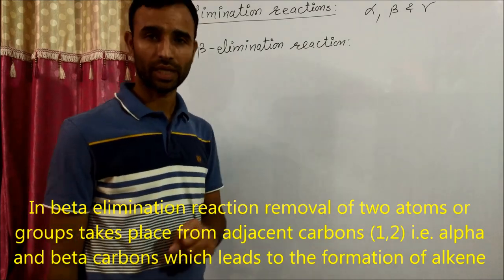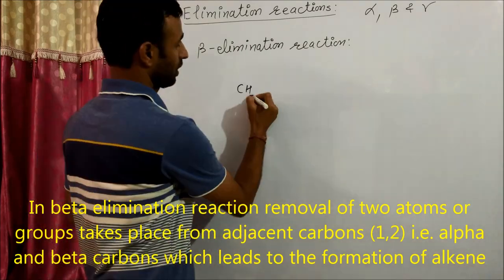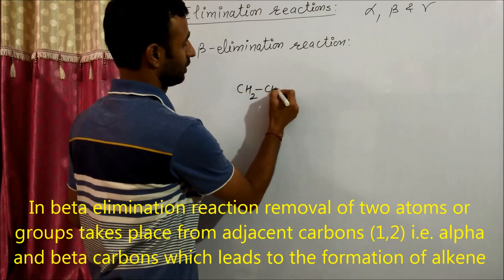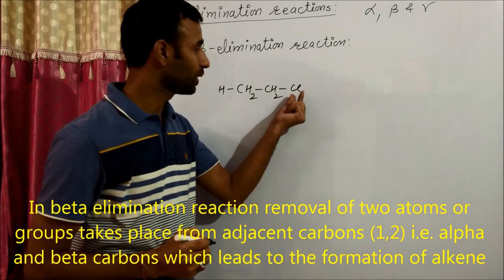Beta elimination reaction. Take an example of alkyl halide. The typical leaving group is chlorine.